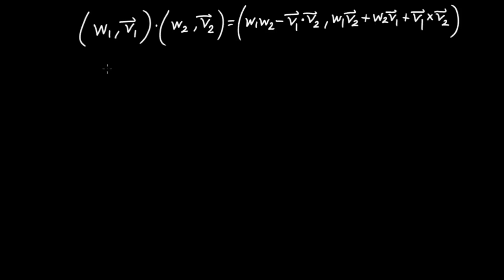What I'd like to do is look at a special case where the two scalar parts of the input quaternions are zero — that is to say, they have a vector part only and no scalar part. So let's say I had some quaternion given by (0, V1).